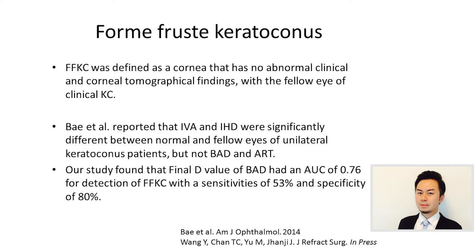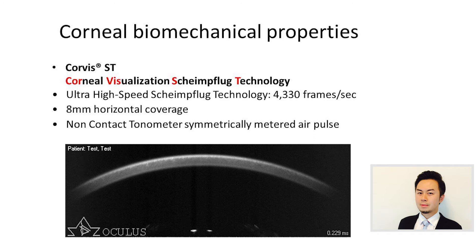How about cases of forme fruste keratoconus? Forme fruste keratoconus is defined as the cornea that has normal clinical and corneal topographical findings, but is the fellow eye of a clinical keratoconus. Studies have shown that the topometric indices IVA and IHD were significantly different between normal and fellow eyes of unilateral keratoconus patients, but not the BAD and ART. We previously performed a study and found that the final D-value of the BAD has an AUC of 0.76 for detecting forme fruste keratoconus, with a sensitivity of 53% and specificity of 80%.